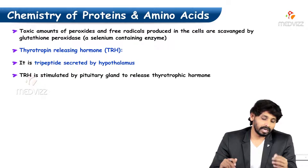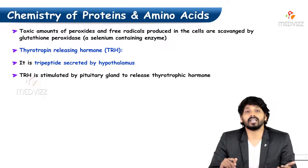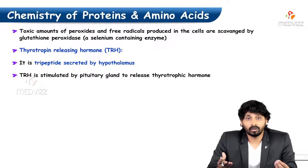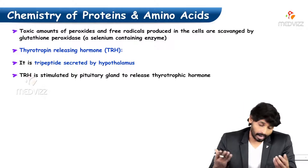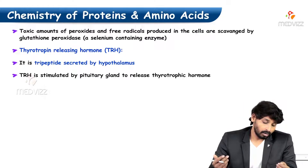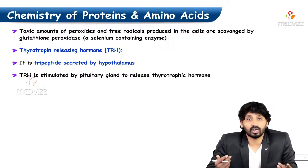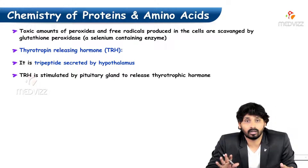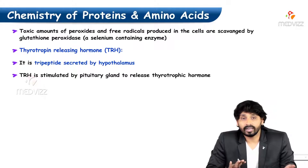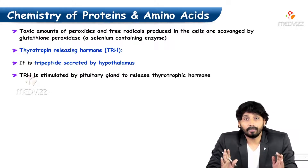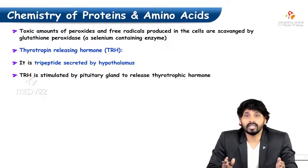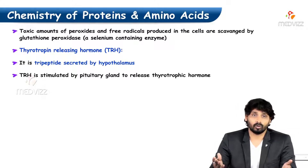Thyrotropin releasing hormone, TRH, is a tripeptide secreted from the hypothalamus. TRH stimulates the pituitary gland to release thyrotropic hormone.